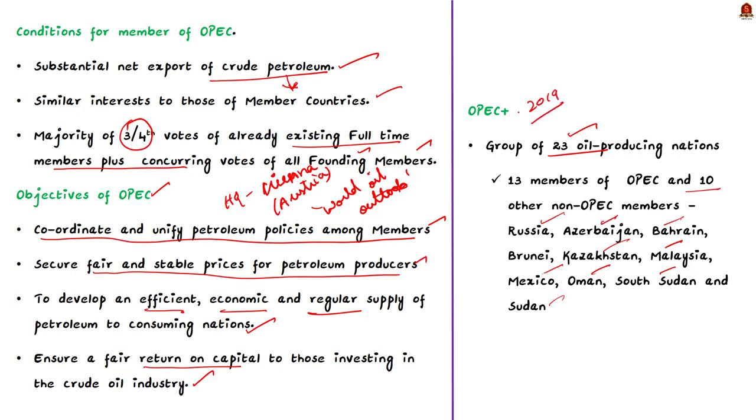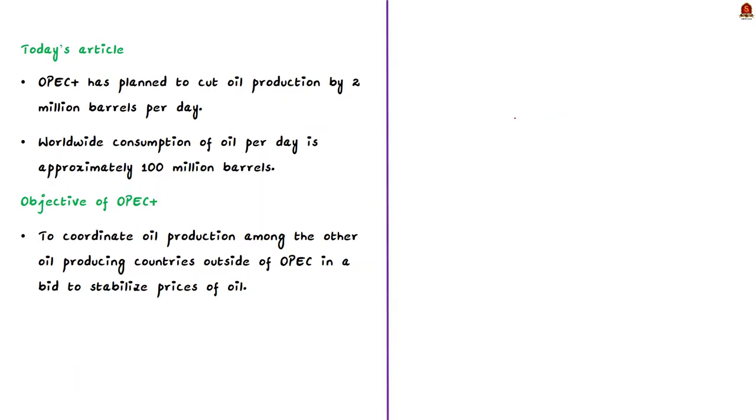It came into existence with a deal to coordinate oil production among the other oil producing countries which are outside OPEC in a bid to stabilize prices of oil. Since then, the group has reached deals for members to voluntarily cut or ramp up production in response to changes in global oil prices. Worldwide consumption of oil per day is approximately 10 million barrels.